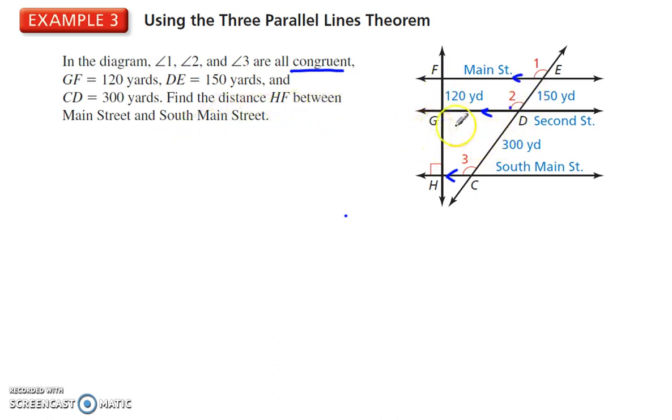Therefore, we can say that these segments are proportional, and segment GH is what we would have to find in order to find the entire length. So, we're looking from F to H, or H to F, but we don't know this segment right here. So, I can set up a proportion. I've got 120 and x, and I have 150 over here, and 300.